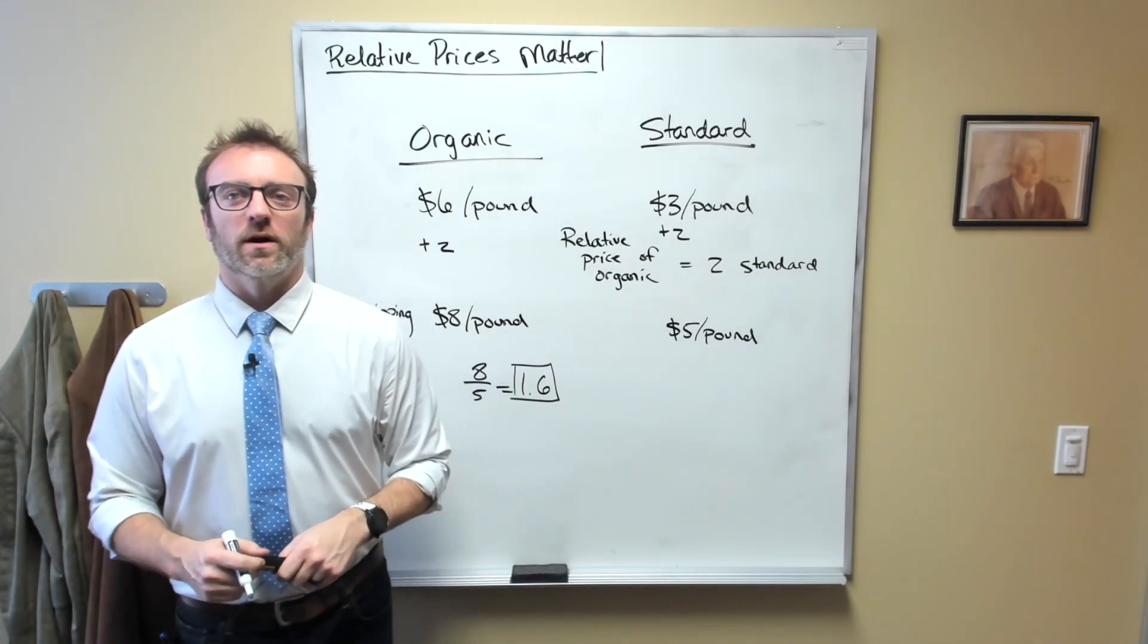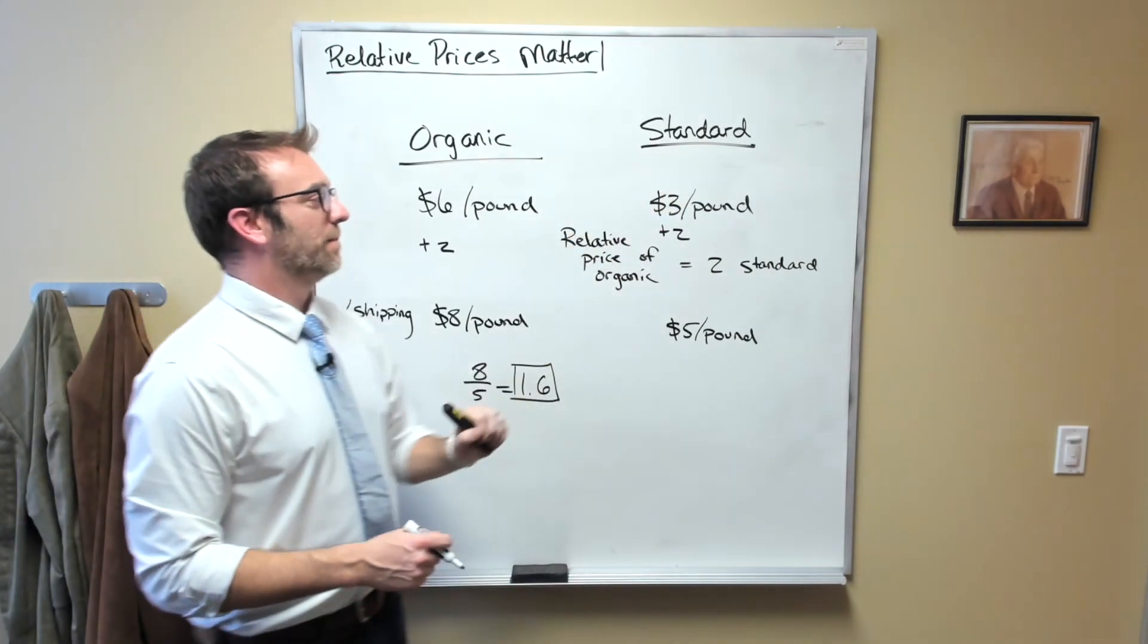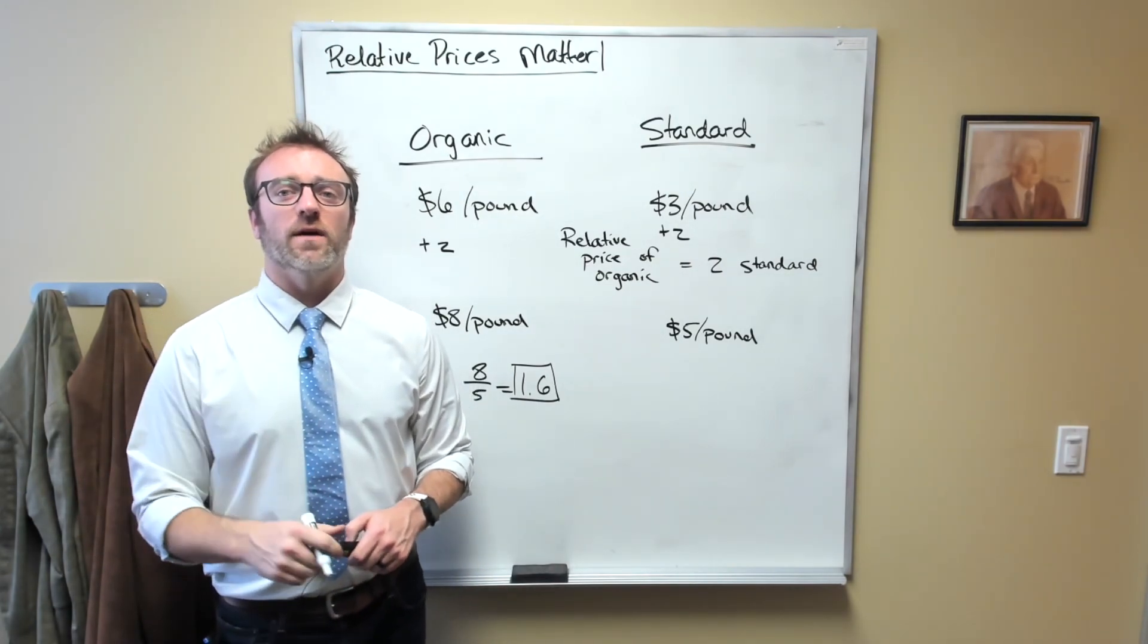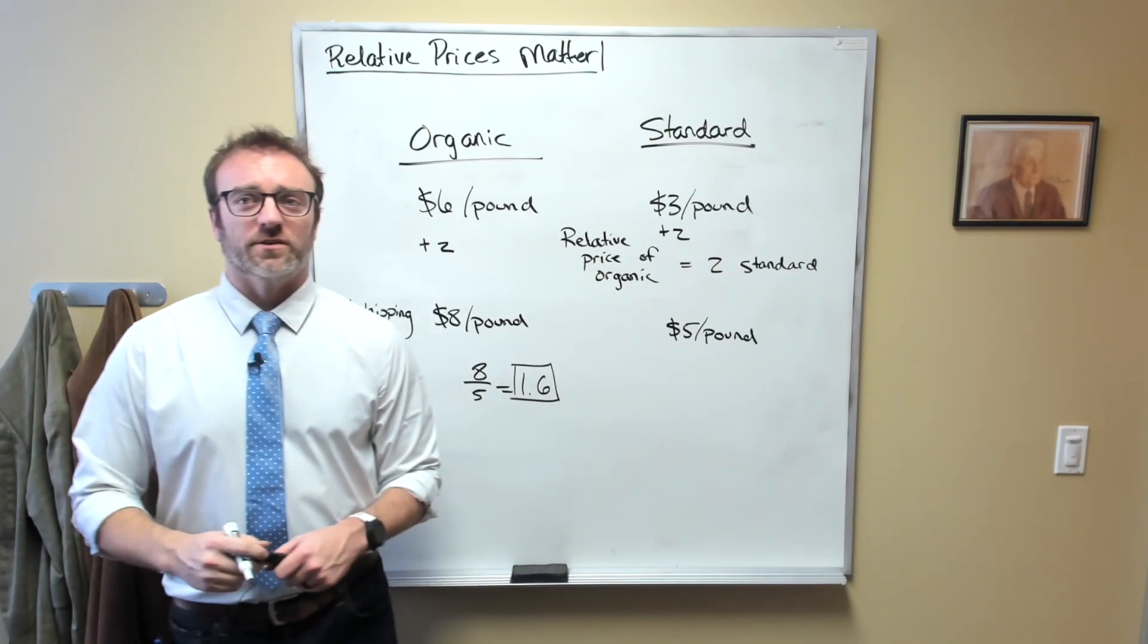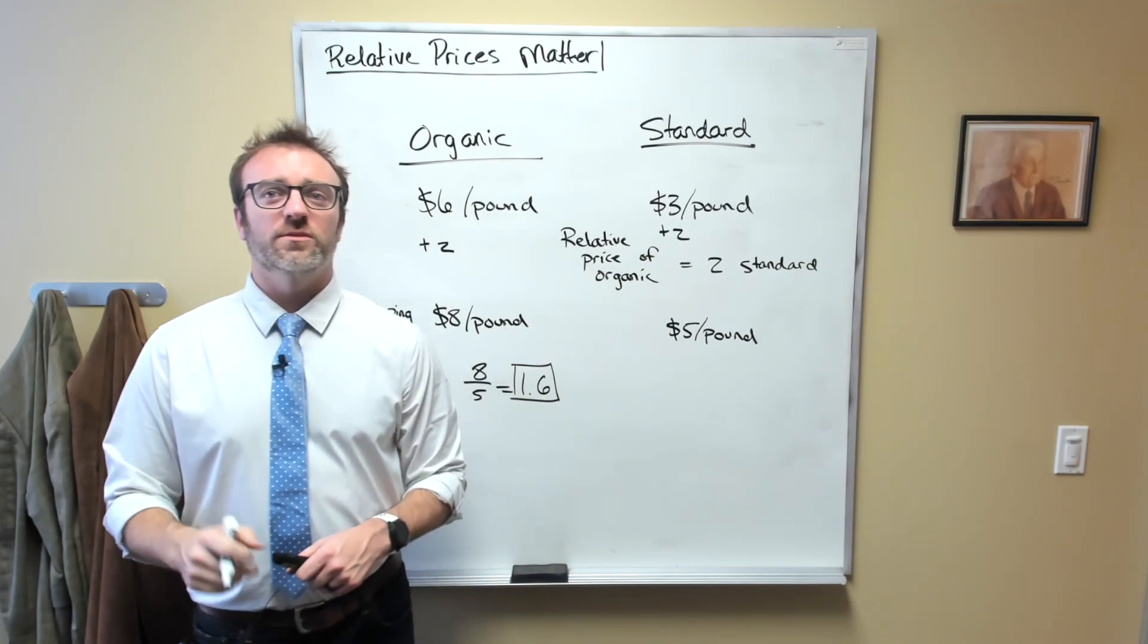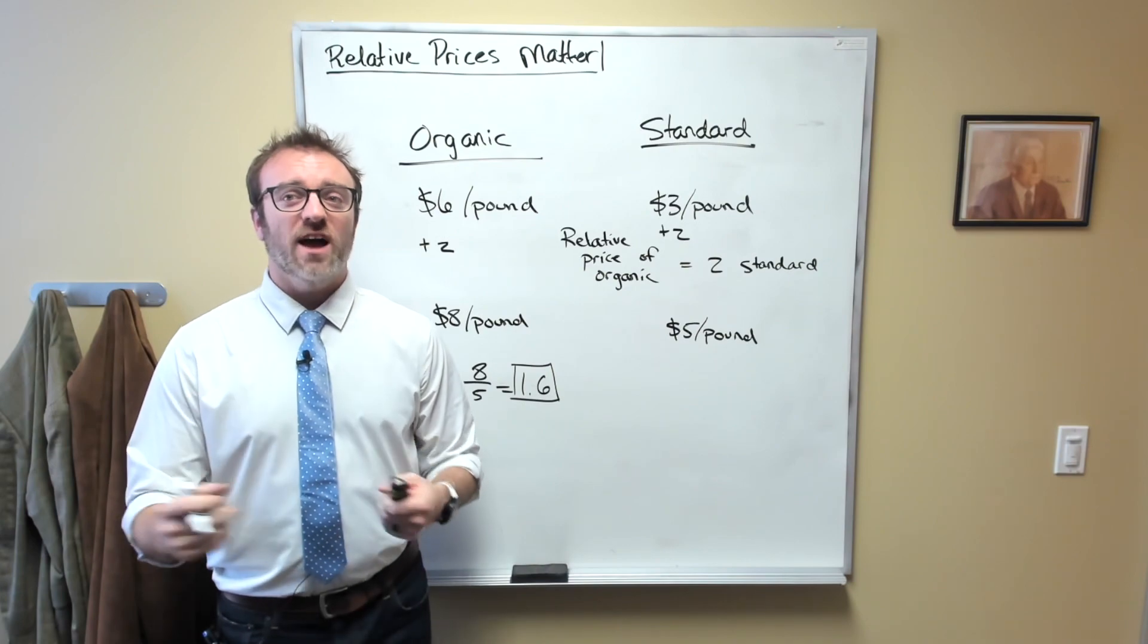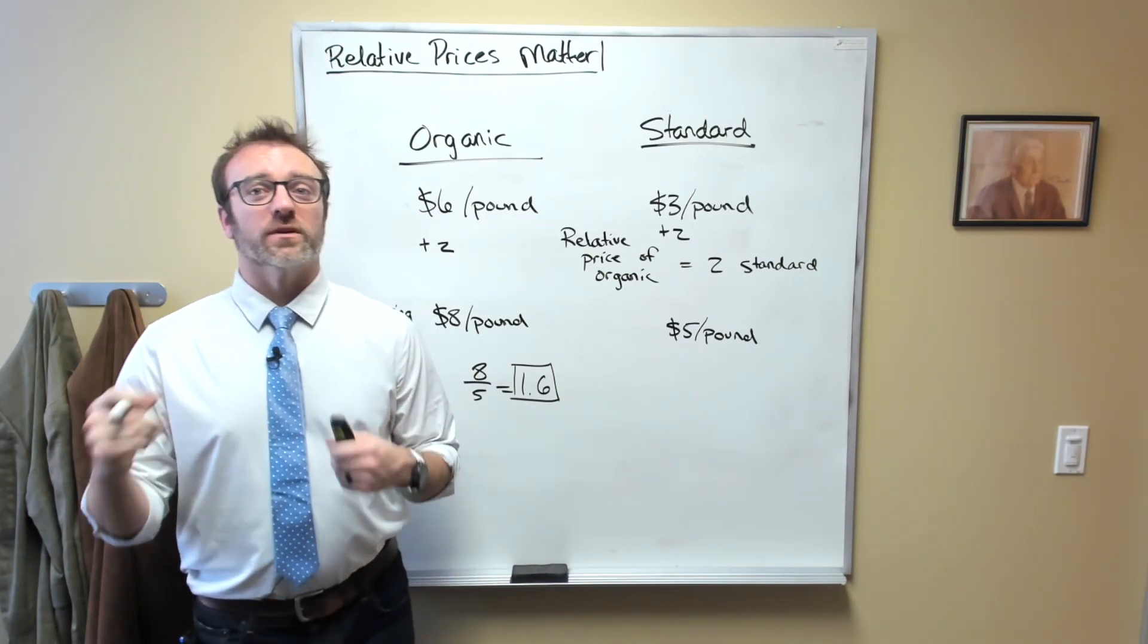Because the relative price has fallen, you now sacrifice fewer standard apples every time you buy organic apples. Because of this, people will be more willing to buy organic apples than they were before. I should clarify something: adding the shipping cost will reduce the quantity demanded for both organic and standard apples, but it will reduce the quantity demanded for standard apples more than for organic apples.